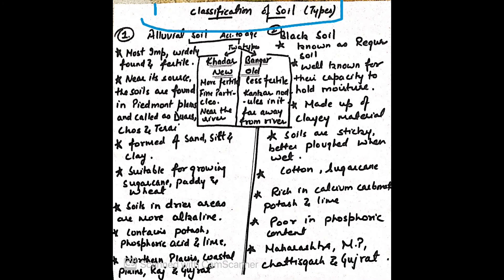Classification of soil according to age — alluvial soil is of two types: Khadar and Bangar. Khadar is the new alluvial soil, whereas Bangar is the old alluvial soil. Khadar is more fertile as compared to Bangar. Khadar has fine particles, whereas Bangar has kankar nodules in it. Khadar is found near the river, whereas Bangar is found far away from the river.